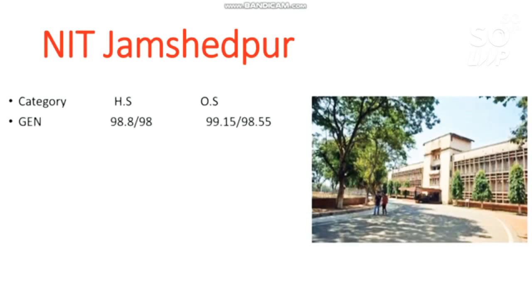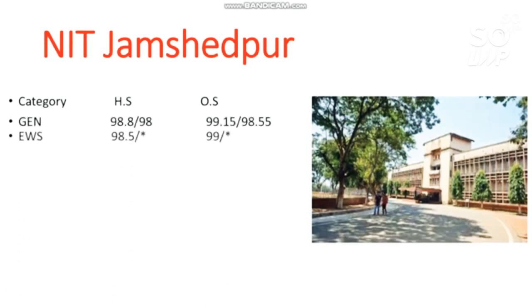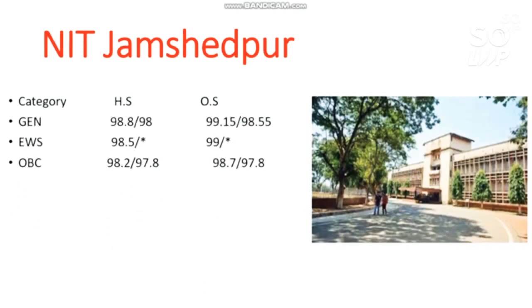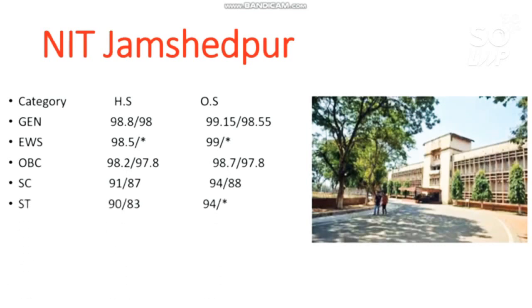NIT Jamshedpur cutoffs: for General, 99.15 percentile. EWS: 99. OBC: 98.7. SC: 94. ST: 94 percentile is required.